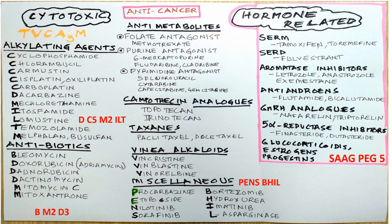Now repeating the classification without interruptions. Big categories: cytotoxic and hormone-related. Among cytotoxic — alkylating agents: cyclophosphamide, chlorambucil, carmustine, cisplatin, oxaliplatin, carboplatin, dacarbazine, mechlorethamine, ifosfamide, lomustine, temozolomide, melphalan, busulfan. Antibiotics: bleomycin, doxorubicin, daunorubicin, dactinomycin, mitomycin C, mitoxantrone. Anti-metabolites — folate antagonist: methotrexate; purine antagonist: 6-mercaptopurine, fludarabine, cladribine; pyrimidine antagonist: 5-fluorouracil, cytarabine, capecitabine.